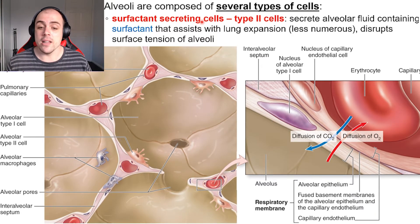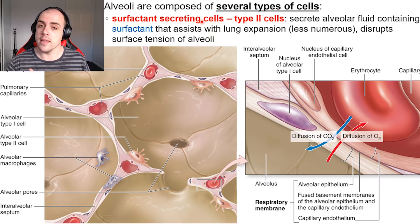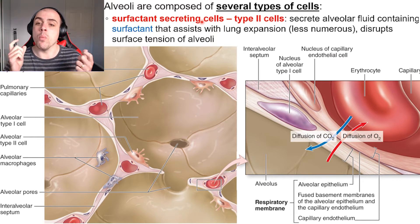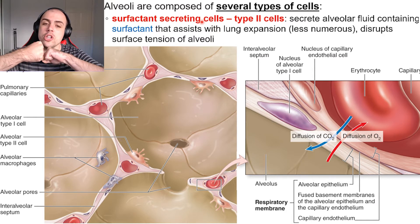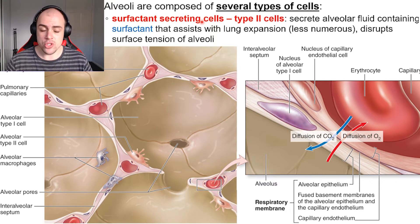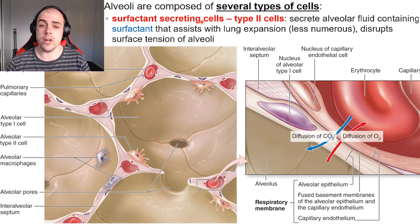The second type of alveolar cells are our surfactant-secreting cells. What surfactant does is lower the surface tension within the lungs to make it easier for us to breathe. It does this by interrupting the hydrogen bonds that occur between water molecules that can glue them together. It doesn't get rid of them — it just minimizes them. This means we are able to expand and open up our lungs more easily, which is a very critical function for breathing.